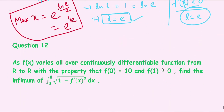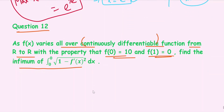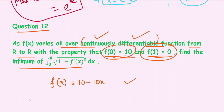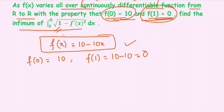Question number 12 says: as f(x) varies over all continuously differentiable functions from ℝ to ℝ with the property that f(0) = 10 and f(1) = 0, find the infimum of the given integral. We consider f(x) = 10 − 10x, which is a polynomial — continuous and differentiable — and we check: f(0) = 10 and f(1) = 10 − 10 = 0. Both conditions are satisfied.